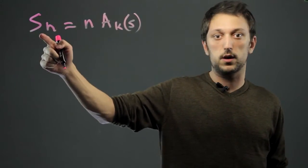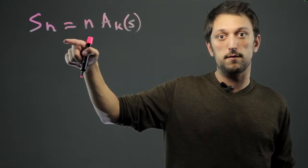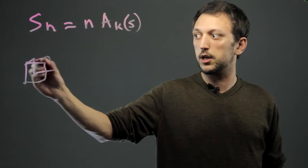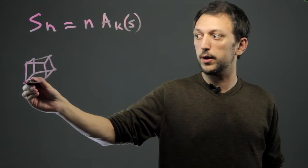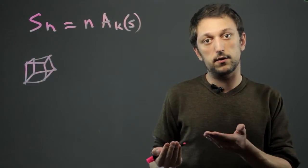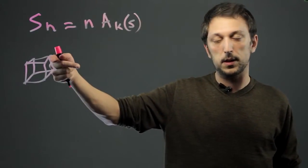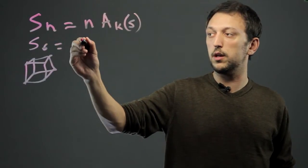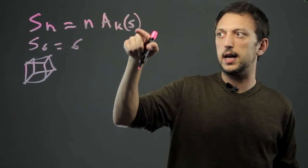So the S is the surface area. The N is the number of faces. Think about a cube - a cube is going to have six faces. Think of a dice. When you roll the dice, you have six choices. So we know, for example, on this one, it would be S of six equals six times AKS.